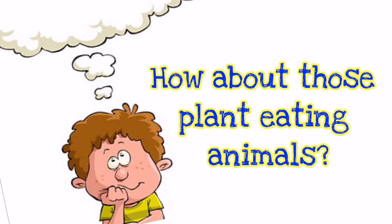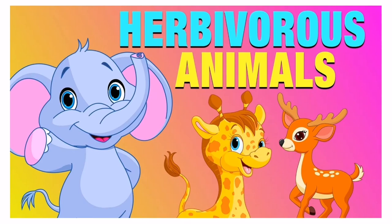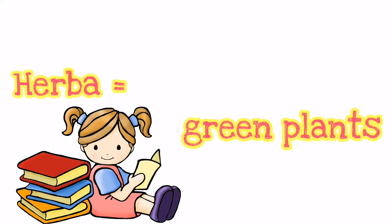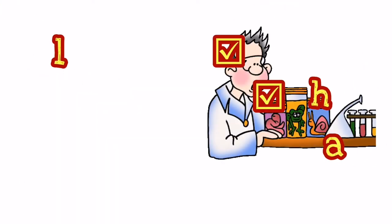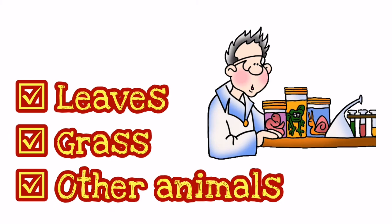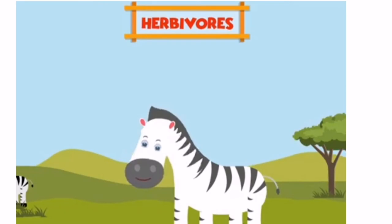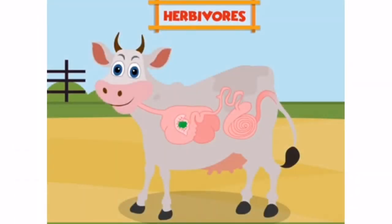But how about those animals that consider plants as food? They're called herbivores. Herbivores comes from the Latin word 'herba,' which means green plants. That's what herbivores eat: leaves, grass, and other plants. Herbivores have developed different types of digestive systems able to handle large amounts of plant material.